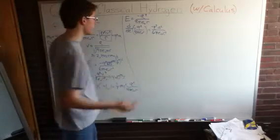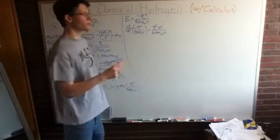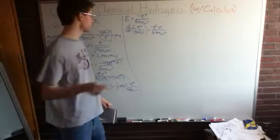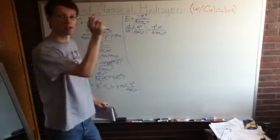Q, the charge of the electron, doesn't depend on time, nor does epsilon naught, and hopefully 8 and pi don't. So, we're going to pull those out. Radius is going to collapse in. So, we're going to have to keep the radius in there.